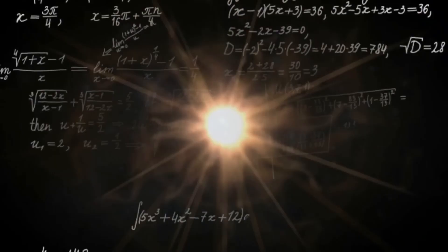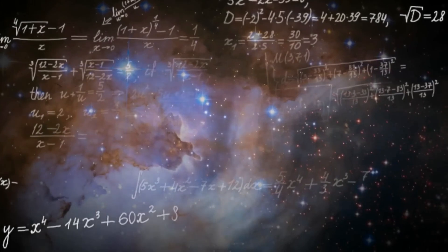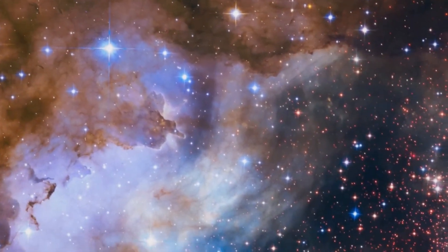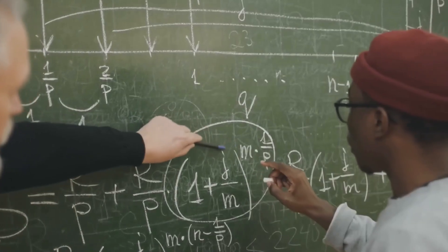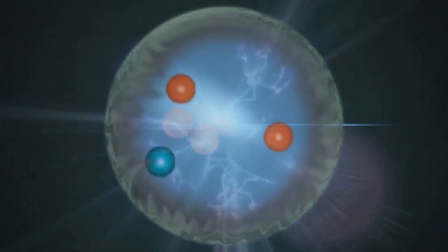However, there comes a critical point where the star can no longer fuse any more elements. In this extraordinary moment, the core of the star collapses under its own weight, like a magnificent implosion.